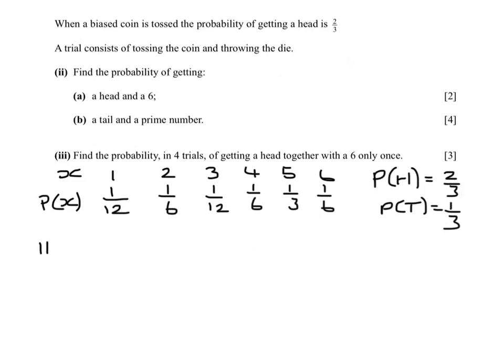So in part 2, I'm asked to find the probability of getting a head and a 6. So that would be a head followed by a 6, which is 2 thirds multiplied by 1 sixth, 1 ninth.